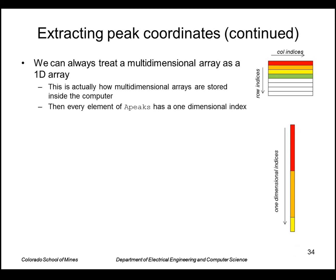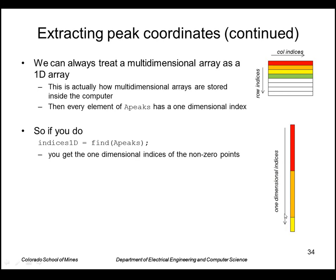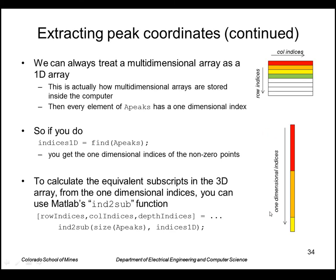In the case of a three-dimensional array, we would have these rows stacked up for the first slice, then the second slice, and the third slice. The values have a one-dimensional index when you think of the array as stored that way. So if you pass a multi-dimensional array into find, it will just return these one-dimensional indices. You can still get back to the equivalent subscripts of the 3D array using the ind2sub function — the indices-to-subscripts function.